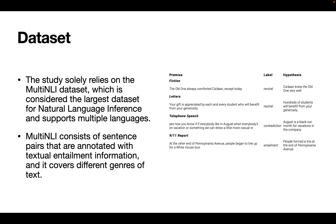The dataset used is called MultiNLI, considered one of the largest in natural language inference. It covers different genres — you can see on the picture on the right genres like fiction, letters, telephone speech, and others. It shows two sentences: the premise on the left and the hypothesis on the right, with a label indicating whether there is a neutral, contradiction, or entailment relation. The first sentence is called the premise and the second is the hypothesis.